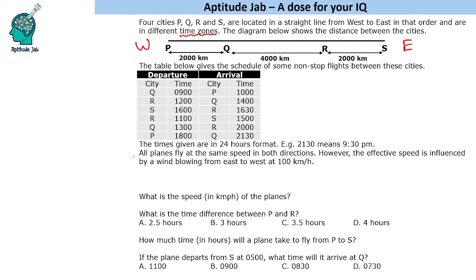All planes fly at the same speed in both directions. However, the effective speed is influenced by a wind blowing from east to west at 100 km/h. First, we find the flight durations from the schedule: one hour, two hours, 0.5 hours, four hours, seven hours, and one and a half hours.